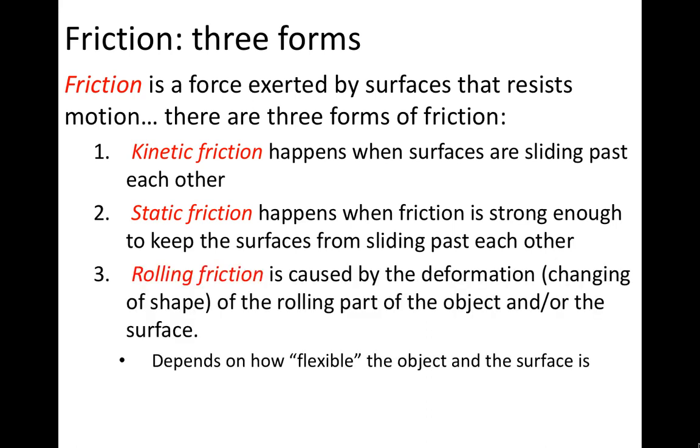The third form is called rolling friction, and this is caused when a rolling object deforms or changes its shape as the object is moving along the surface. Rolling friction will not be covered in much detail, but it does happen whenever there's an object that is rolling along a surface.